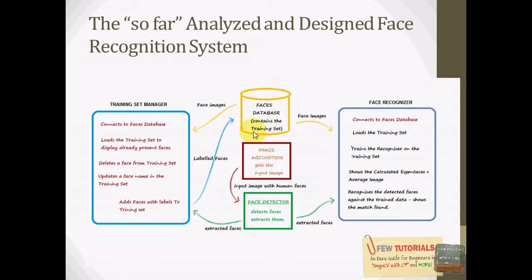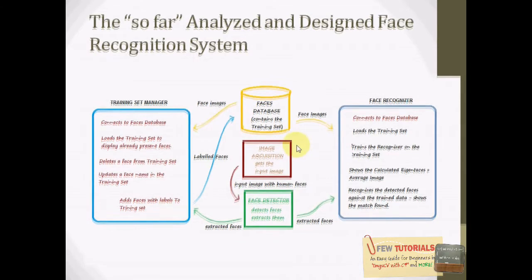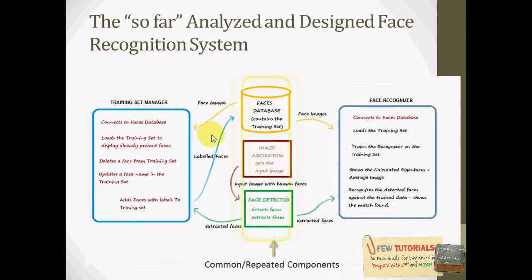We have now found out how the components should actually interact with each other. The remaining part is to partition the system if possible into subsystems, because breaking the system into lower parts will enable us to understand better how to implement it in smaller parts and then integrate those parts to make the whole system. Our face recognition system has two major components — face recognizer and training set — which share three common components: faces database, image acquisition, and face detector.